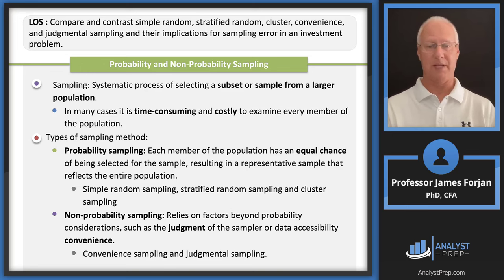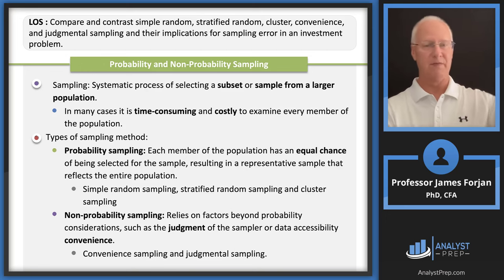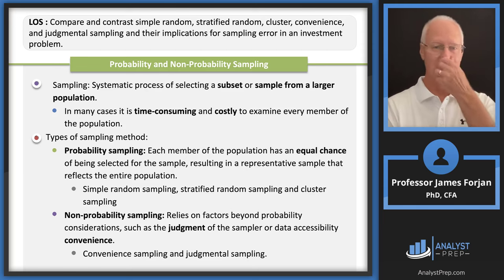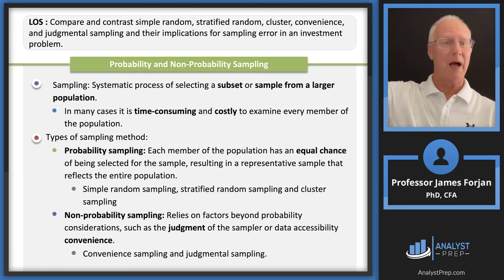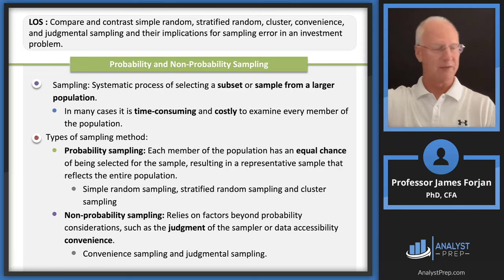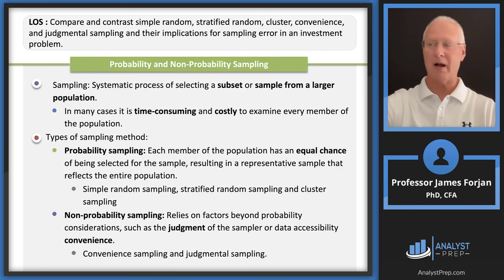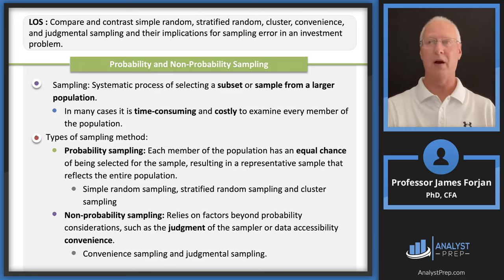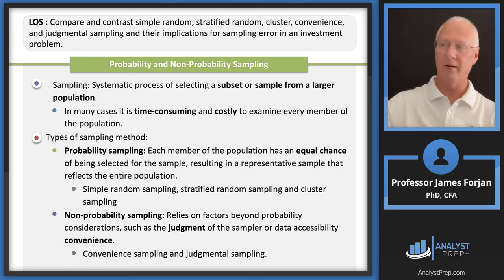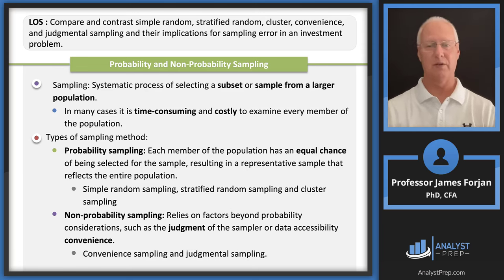Then you can have non-probability sampling. Convenience sampling means the data is right here, accessible and proximate to the researcher. Suppose instead of a regular yard, we're a farmer with a yard that goes 27 miles — am I going to go way out there to get the sample? No, I'm probably just going to sample right here. Judgmental sampling means taking a step back, looking at the global picture, and deciding the best samples are over here, not over there.